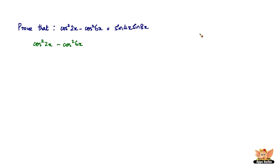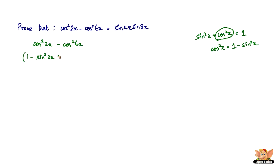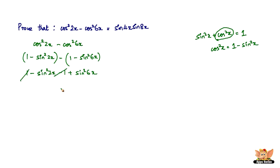If you remember the identity sin²x + cos²x = 1, you can write cos² of any angle as 1 minus sin² of that angle. So cos²2x becomes (1 - sin²2x), and cos²6x becomes (1 - sin²6x). Expanding: 1 minus sin²2x minus 1 plus sin²6x. The 1 and the negative 1 cancel, leaving sin²6x minus sin²2x.